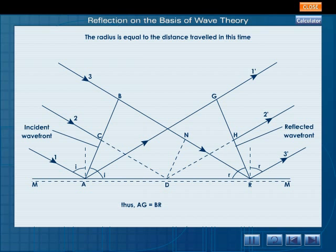Thus, AG is equal to BR. Similarly, when the wave front strikes the surface MM at D, B reaches N. By the time N strikes R, a secondary wavelet of radius DH is produced such that DH is equal to NR.